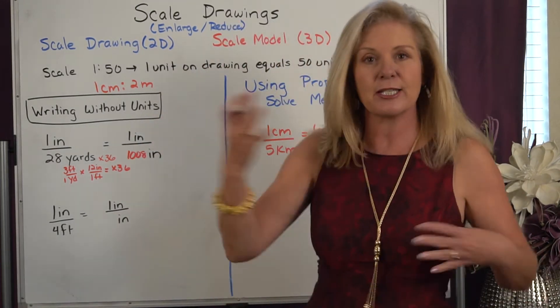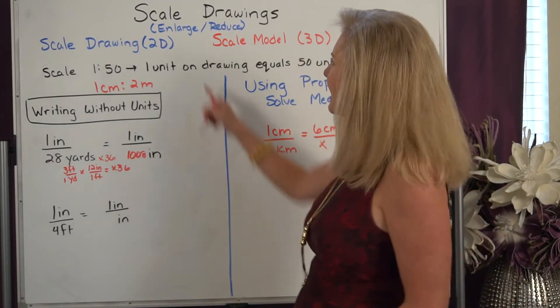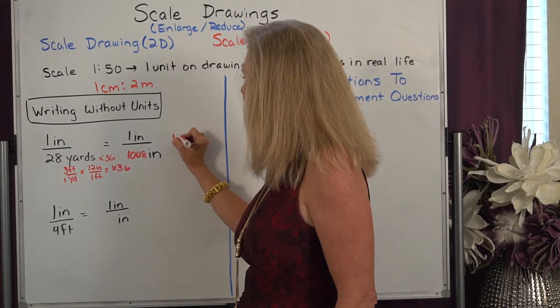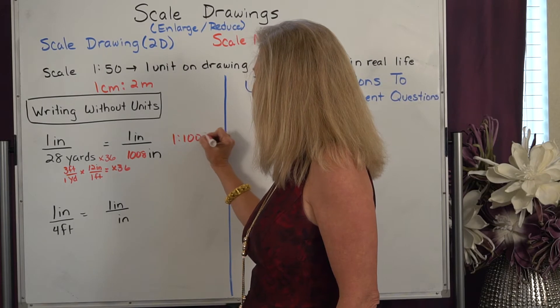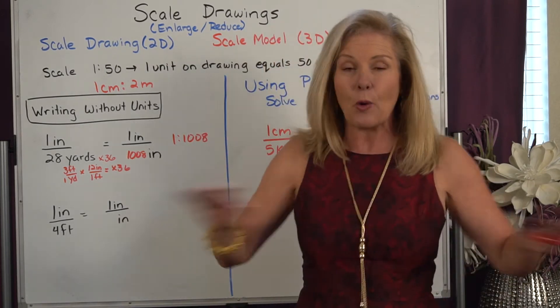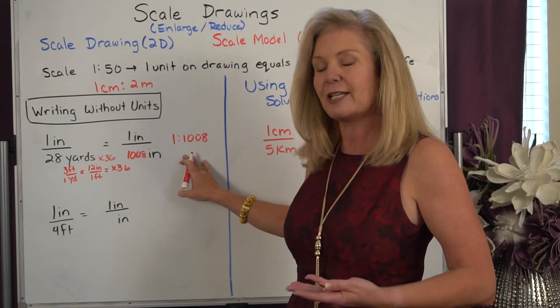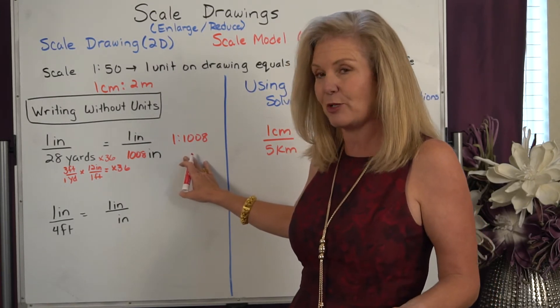If I now have inches compared to inches then I can write it without units of measure. 1 is to 1008. You're guaranteed if there are no units of measure then they have to be the same units.